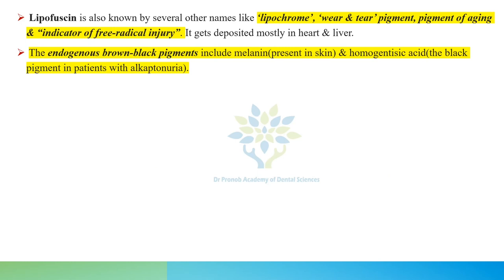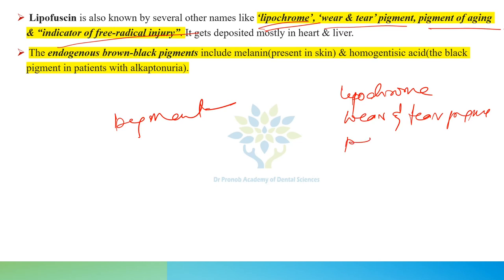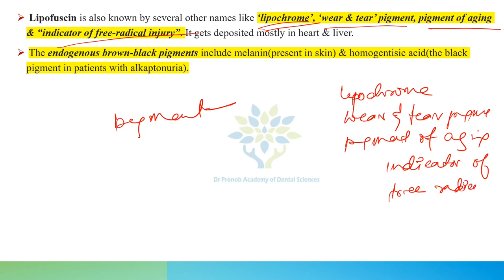Coming to pigments: lipofuscin is also known by several other names — lipochrome, wear and tear pigment, pigment of aging, and indicator of free radical injury. Lipofuscin gets deposited mostly in the heart and liver.